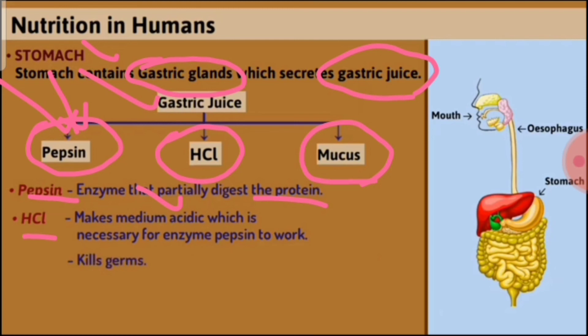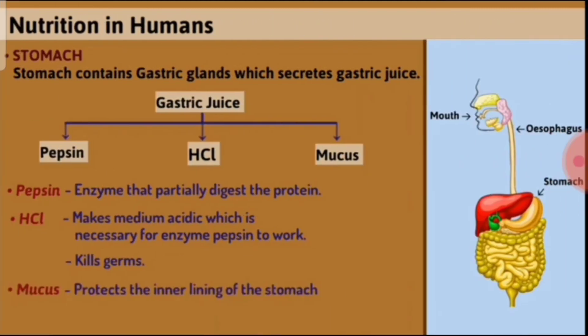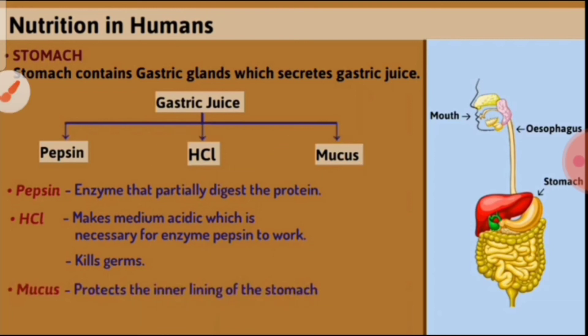HCl provides the acidic medium that activates the pepsin enzyme, since pepsin is activated in the acidic medium provided by HCl. HCl also kills germs. Mucus protects the inner lining of the stomach from the hydrochloric acid.